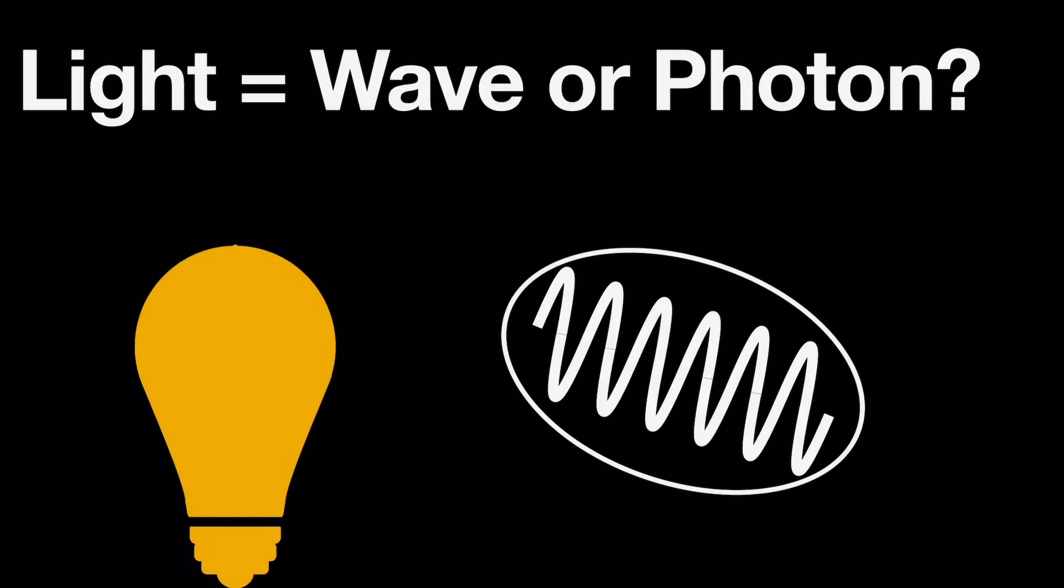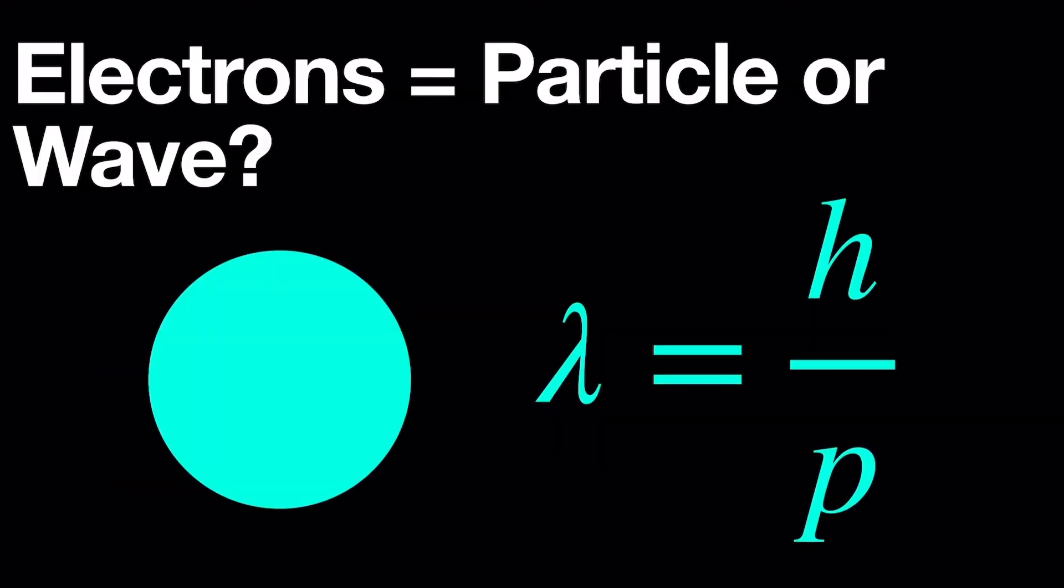Maybe you've learned that just like things we thought were waves, like light, have particulate properties as in photons, things we thought were particles have wave-like properties, like electrons.